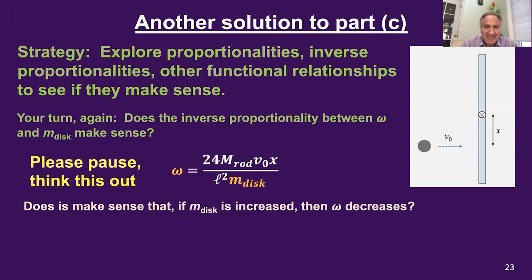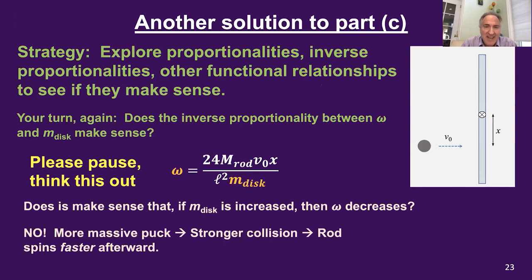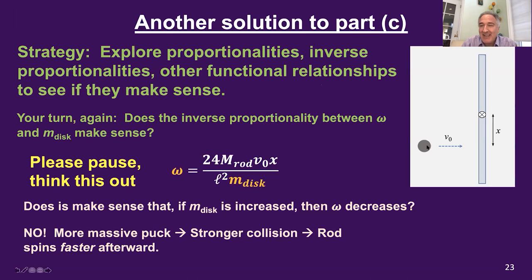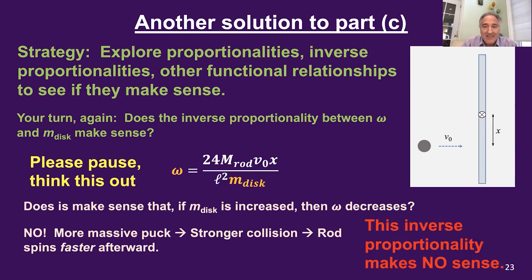The question at hand is: if we increase the mass of the disk, the equation says the angular speed of the rod after the collision decreases. Does that make sense? No. Intuitively, if we make the puck more massive, it's going to collide with the rod more strongly — more technically, it's going to bring more angular momentum into the collision. A heavier, more massive puck ramming into the rod is going to make the rod react more and spin more afterwards. So this inverse proportionality makes no sense — a heavier disk leads to less angular speed according to the equation, whereas we expect more.